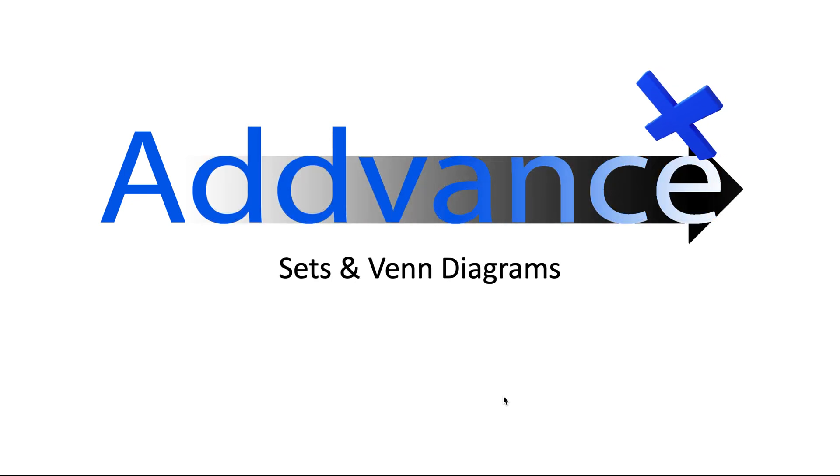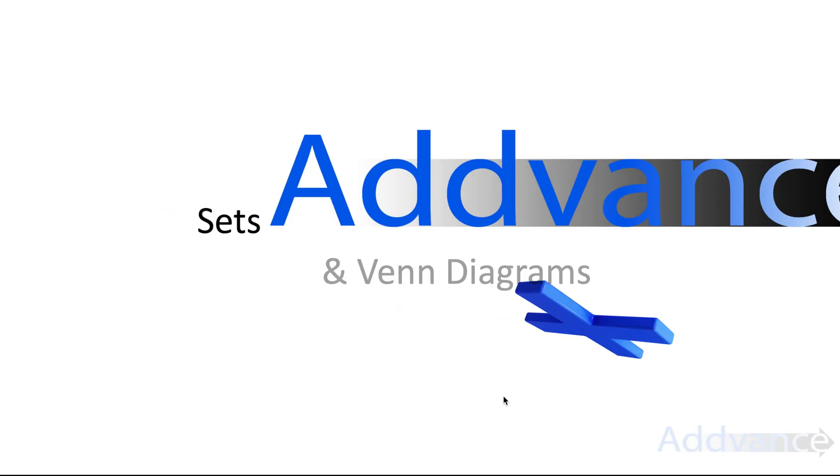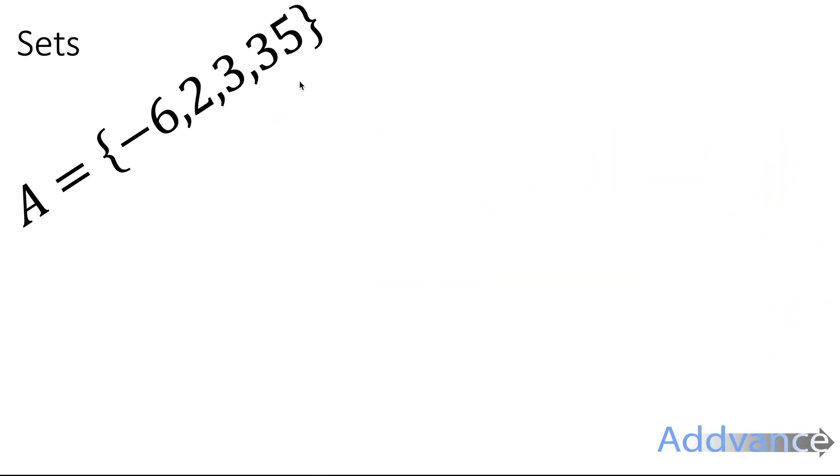Hello everybody, today we're looking at sets and Venn diagrams. Let's start by talking about what a set is. A set is a group of objects. We call the objects in the set elements.